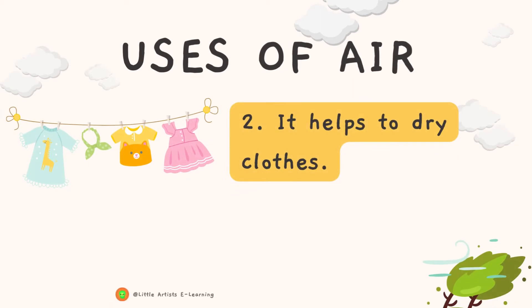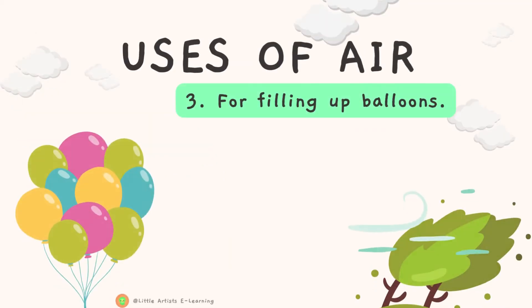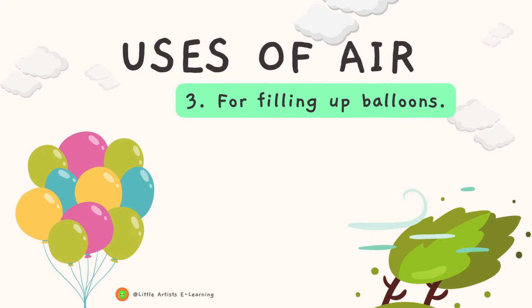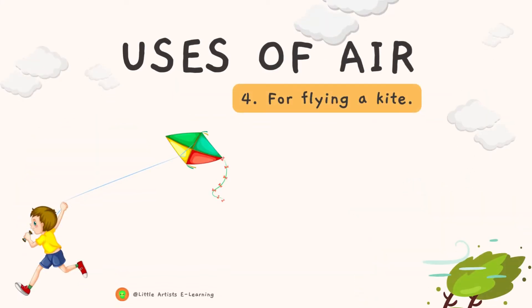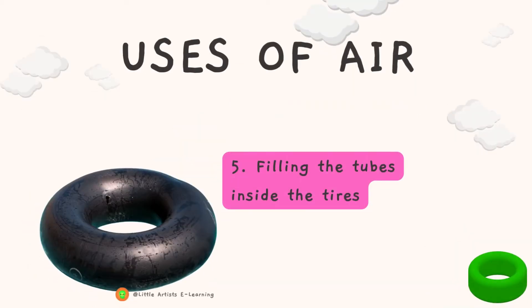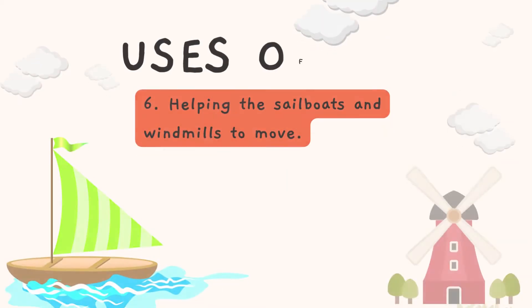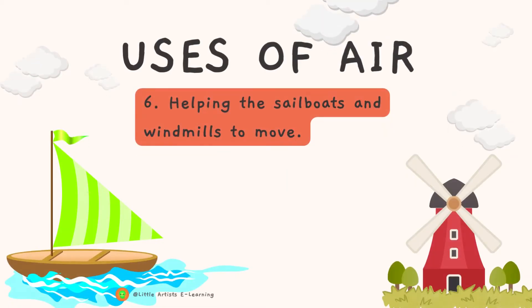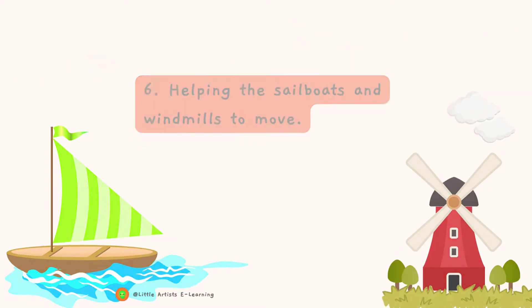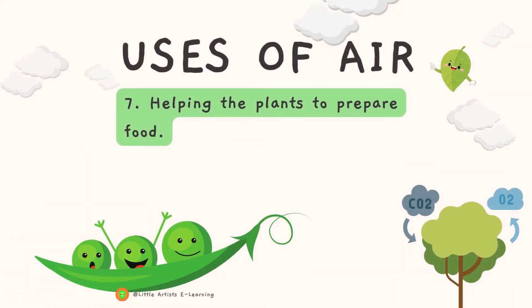Uses of air: number one, living things breathe in air; number two, it helps to dry clothes; number three, for filling up balloons; number four, for flying a kite; number five, filling the tubes inside the tires; number six, helping the sailboats and windmills to move.